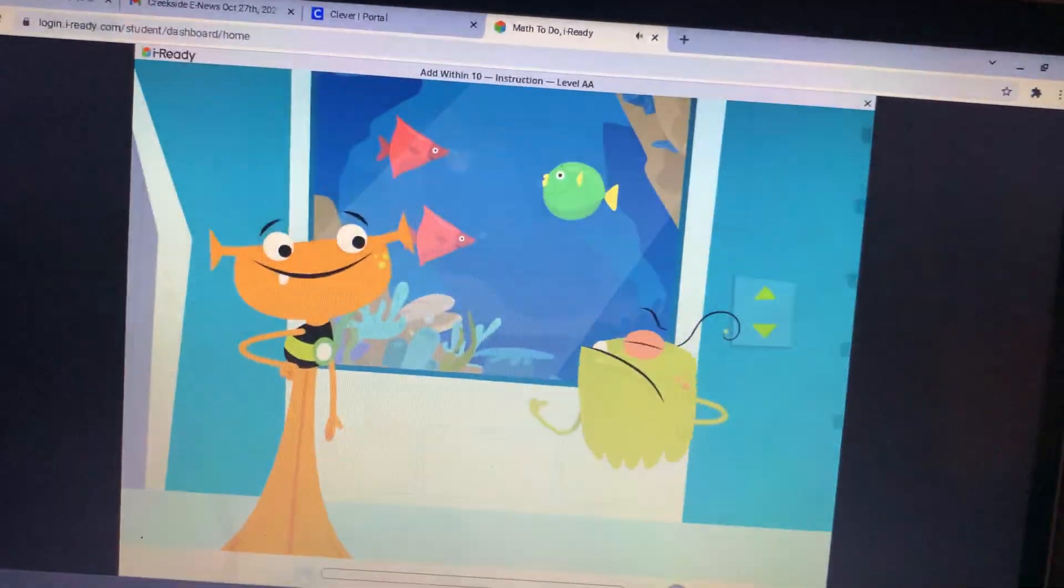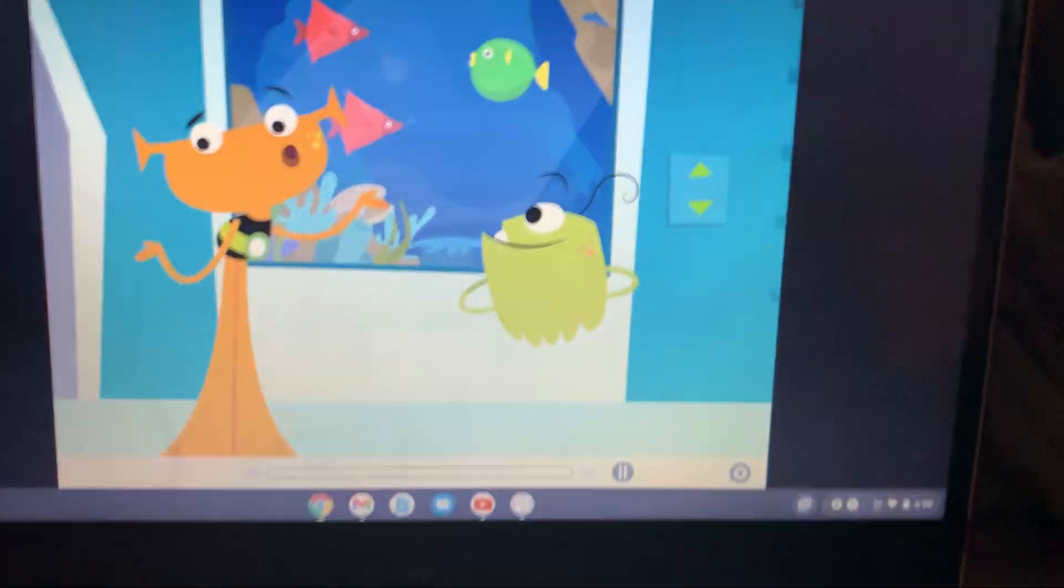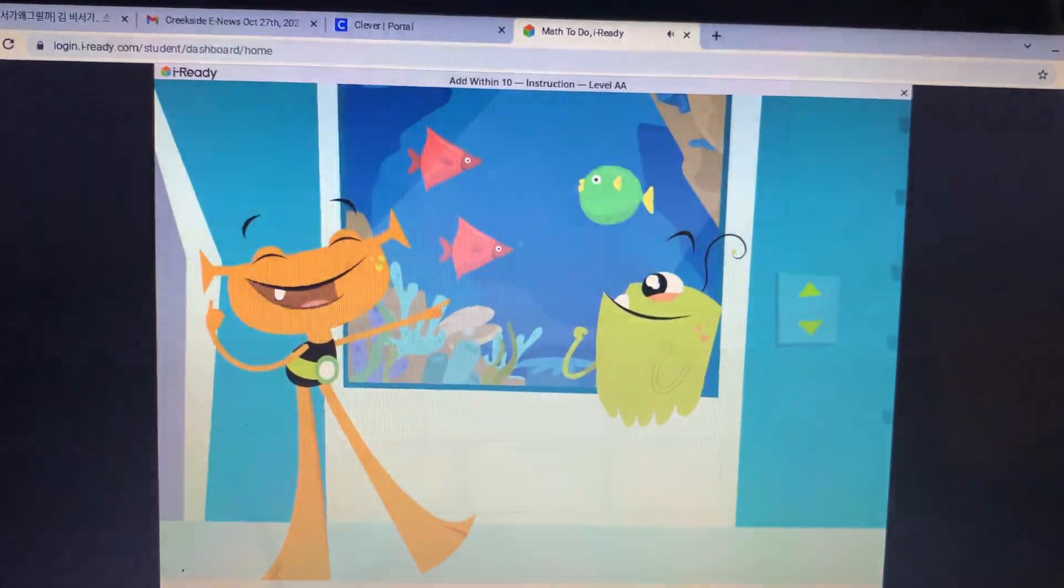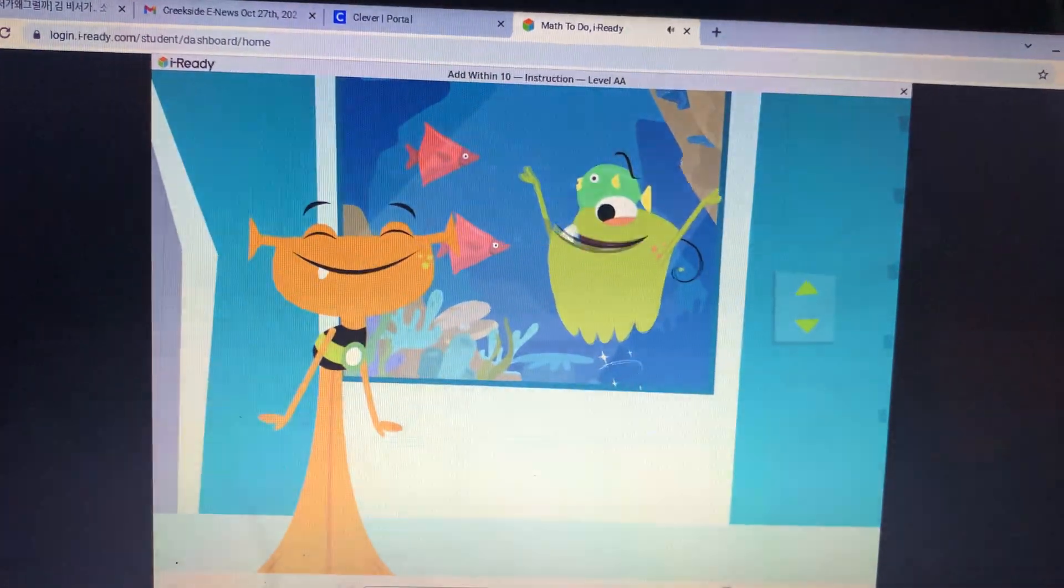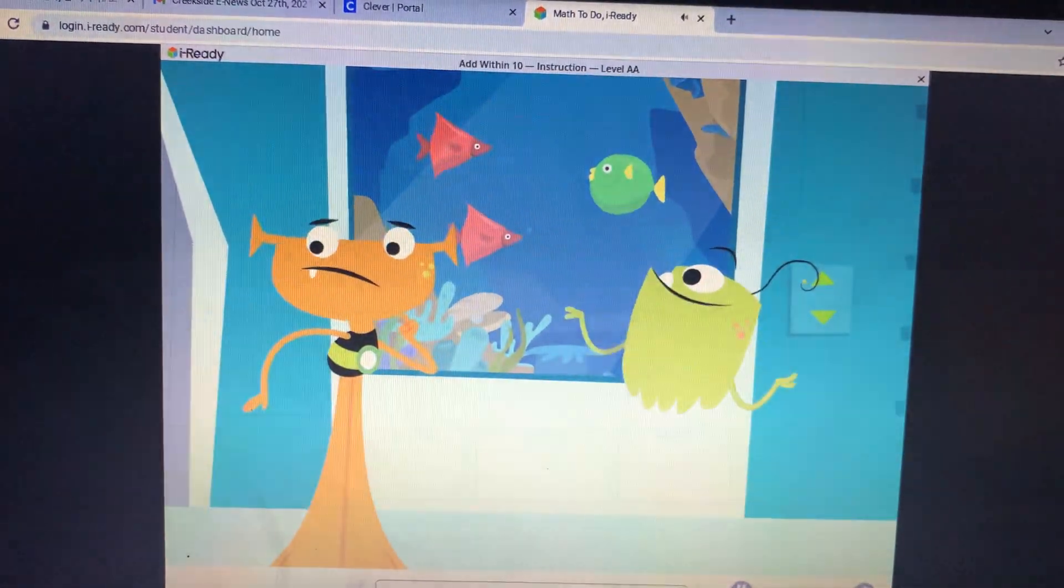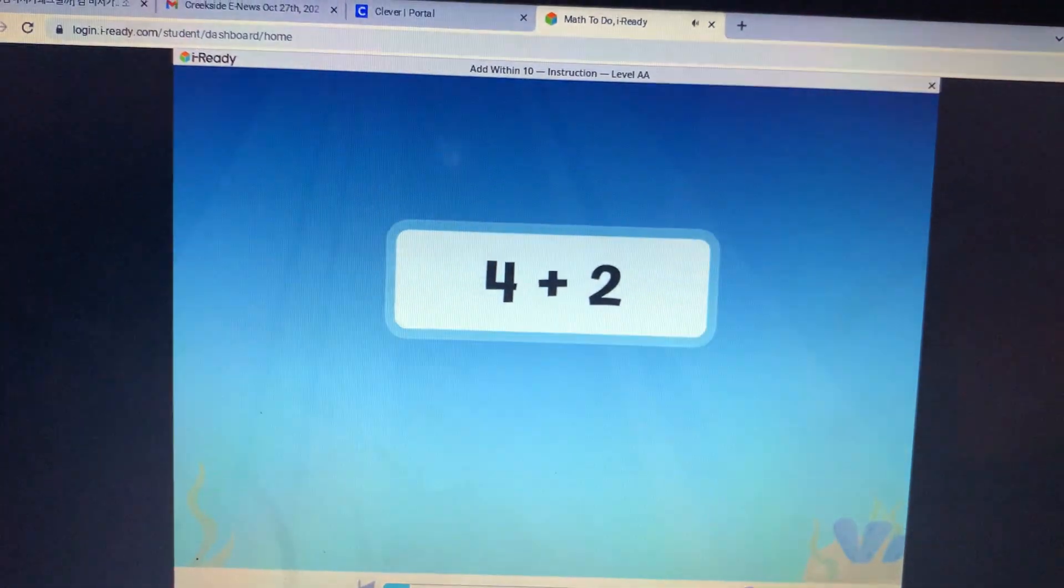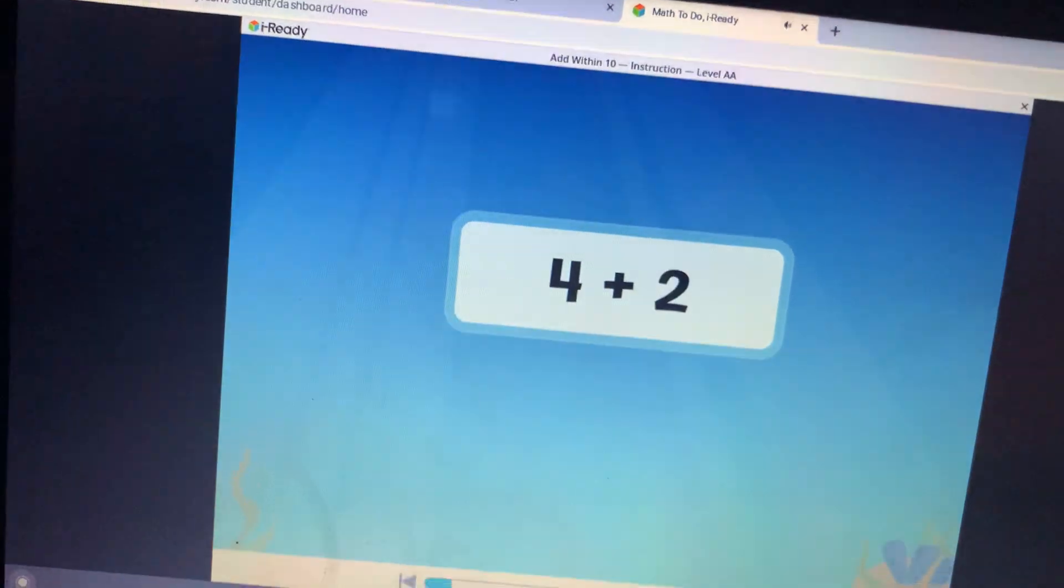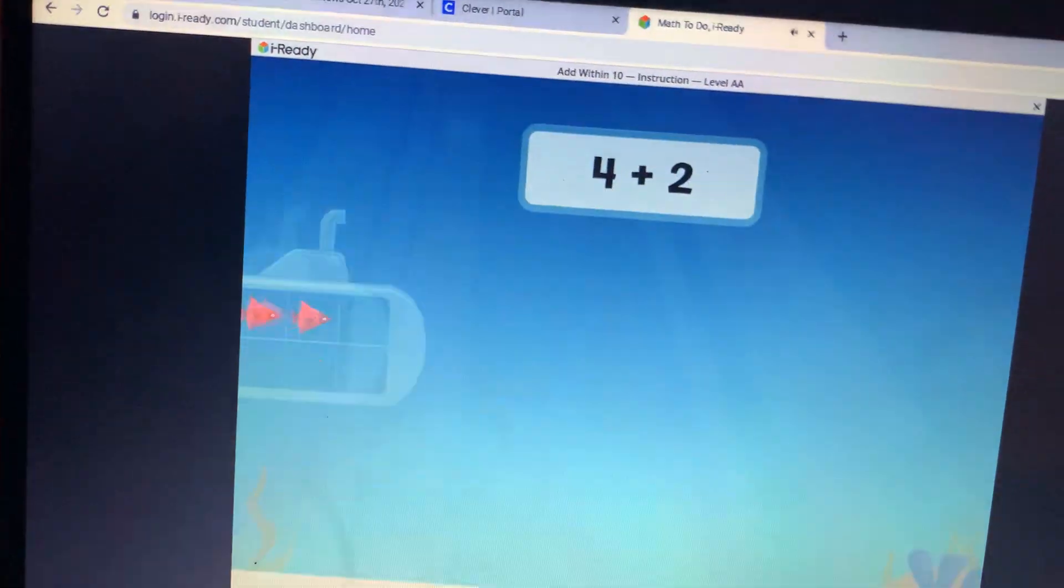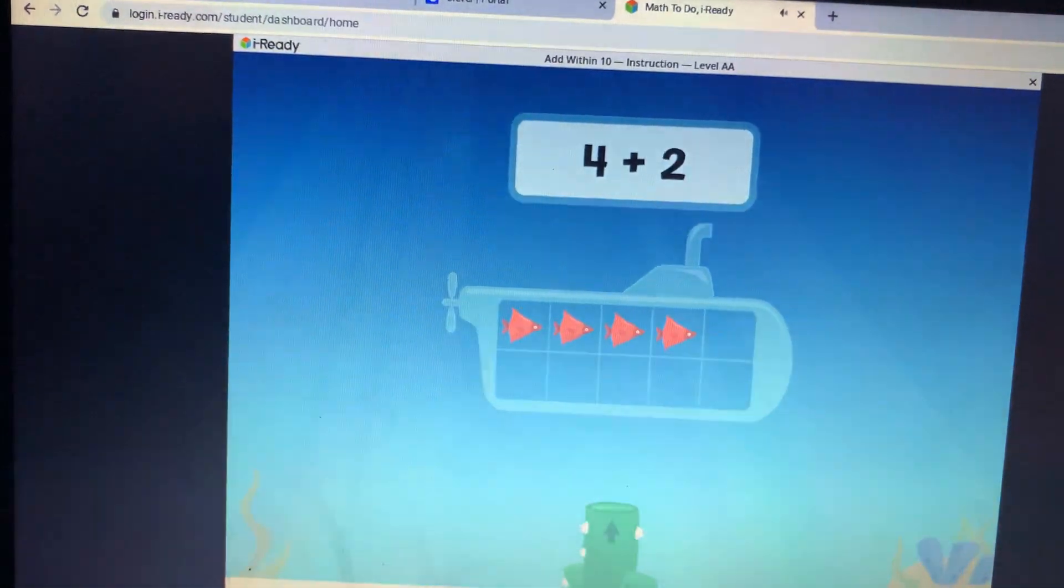Flory, fish like to have parties, right? Of course they do. Let's have a fish party. Hooray! I'll make hats. How many fish are there in all? Let's add to find out. Let's find four plus two. We'll start with four fish. And then add two more. Tap the tube to add two fish.